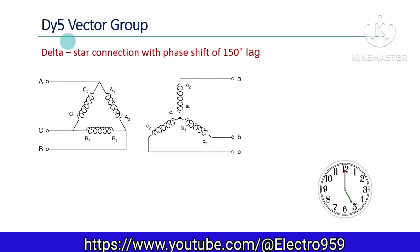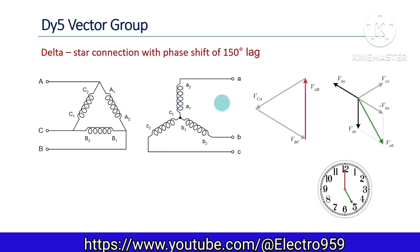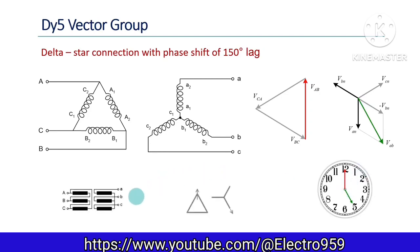In the DY5 vector group, the primary is delta connected and the secondary is star connected. Note that the polarity of the secondary side windings is changed here — the positions of A1 and A2 are interchanged. Therefore, in the phasor diagram, the voltage induced in winding A of the secondary will be 180 degrees displaced from the primary side line voltage. Similarly, the VB phasor is also displaced by 180 degrees. The line voltage VAB in the secondary is obtained by VA minus VB, resulting in the secondary line voltage lagging by 150 degrees — the 5 o'clock position holds good in this case also. The simplified connection diagram and displacement diagram are shown.